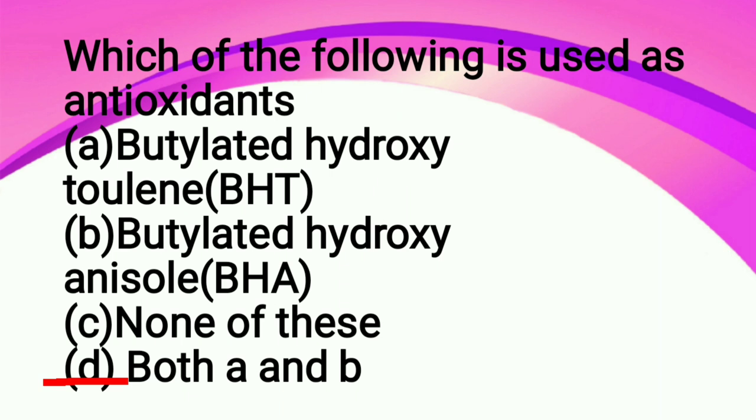First artificial sweetener was: option A sucrose, option B saccharine, option C fructose, option D aspartame. So the correct answer is option B saccharine. Saccharine was the first artificial sweetener that was developed, and before other sweeteners were developed, it was used the most.